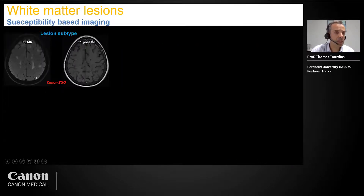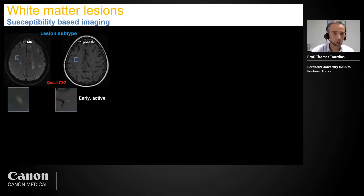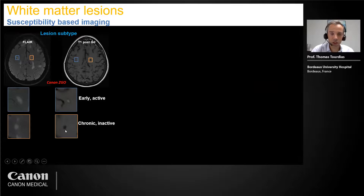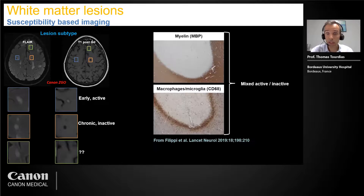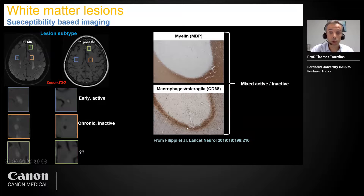The problem with basic sequences — FLAIR, T1, T1 gadolinium — is that they are not very specific for the subtype of MS lesion. When you have an early active lesion it can show gadolinium enhancement; when you have a chronic inactive lesion it's hypointense on T1. But all the others cannot be characterized. There is a histological subtype of interest: the mixed active-inactive lesion, with an inactive center but permanent activity at the periphery. At the periphery, this rim shows microglia and macrophages that are iron-rich. So susceptibility-based imaging has been used.